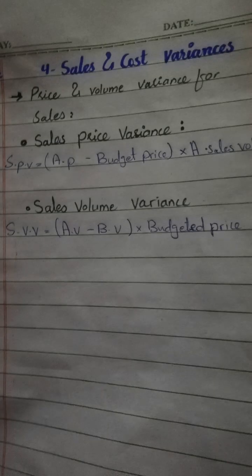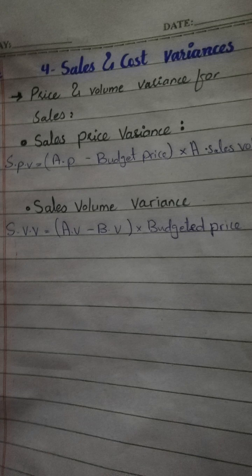The fourth and last major variance is sale and cost variance, also known as price and volume variances for sales, which has two sub-kinds: sale price variance and sale volume variance. This is the complete scenario for analyzing variance based on different kinds and sub-kinds of variances with formulas.